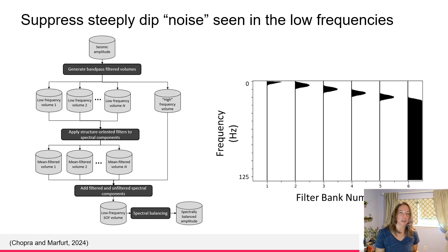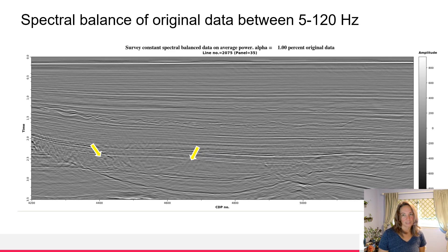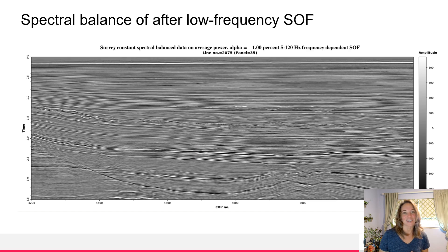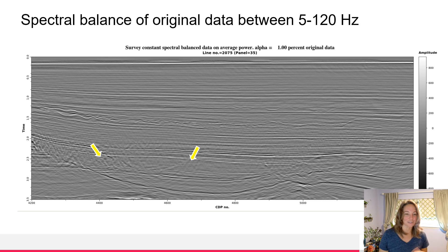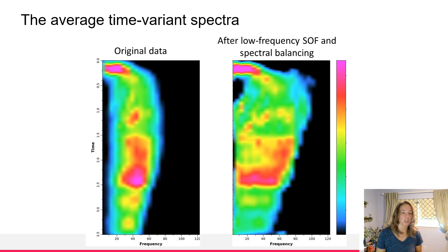We also have a workflow in ASPE that helps us suppress noise from very steep dips, particularly in the low frequencies. We do this by creating a number of filter banks. Here's the original data, and here's the spectral balance of the original data between 5 and 120 hertz. The yellow arrows point out some reflections we don't want to keep in the data, and after doing the low frequency structurally oriented filtering, you can see those are removed. We can also look at what the spectra looks like for the original data and then after the low frequency SOF and the spectral balancing.